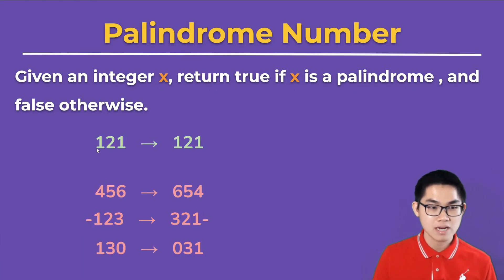For example, the number 121 is a palindrome because when you reverse it, it is still 121. 456 is not a palindrome because when you reverse it, it is 654, and that's not the original number.